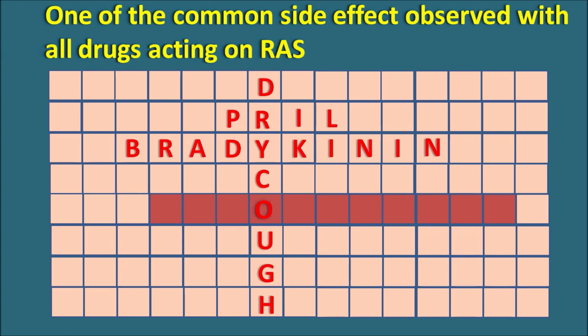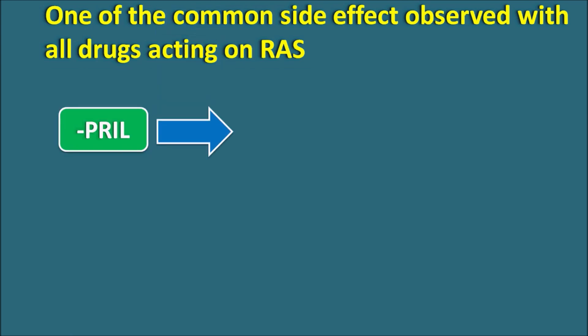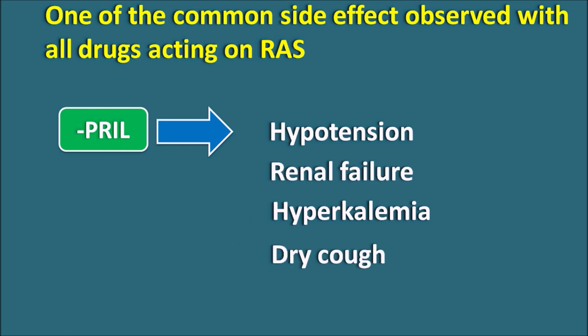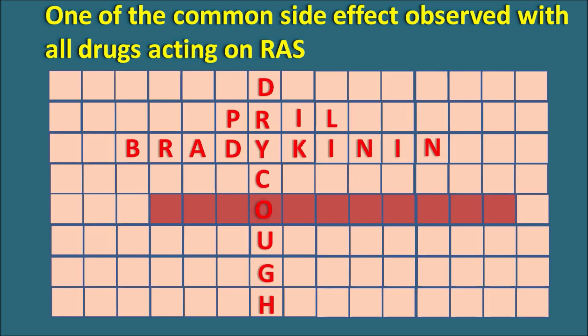Next block: one common side effect observed with all drugs acting on the renin-angiotensin system — that is, a side effect common to both ACE inhibitors and ARBs. ACE inhibitors produce hypotension, hyperkalemia, renal failure, and dry cough. Hypotension is a common side effect of both ACE inhibitors and ARBs because they reduce the synthesis or action of angiotensin II, thereby reducing blood pressure. So hypotension is the common side effect of all drugs acting on the renin-angiotensin system — we fill in hypotension.